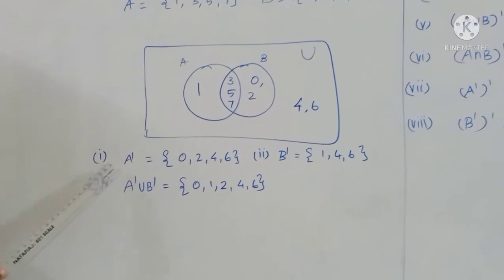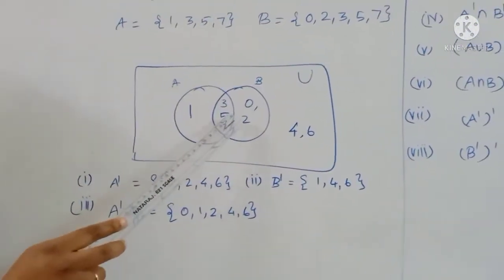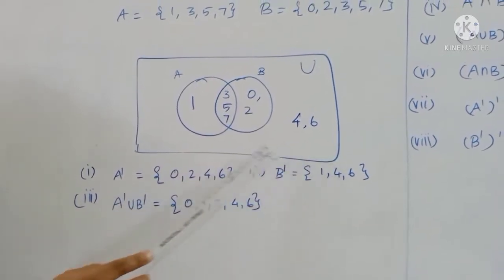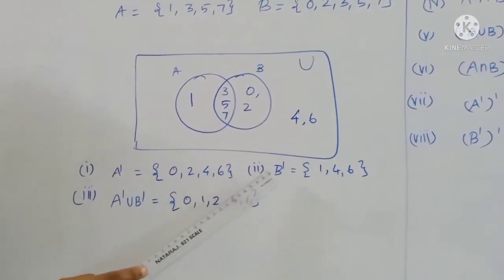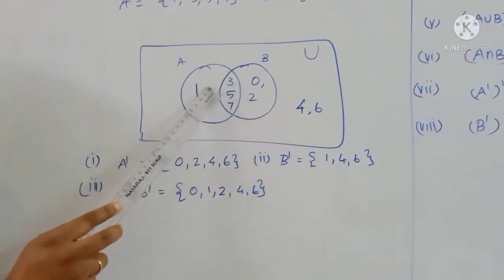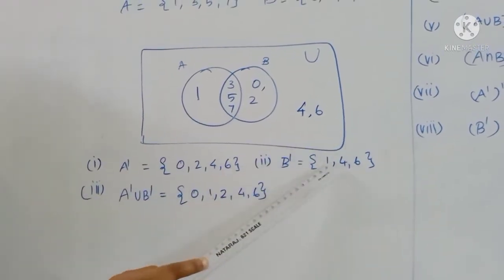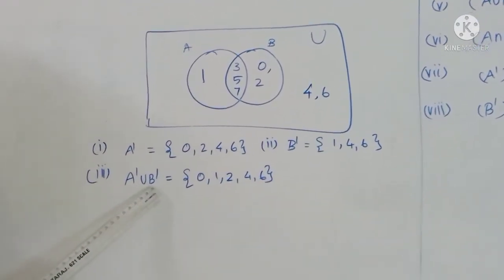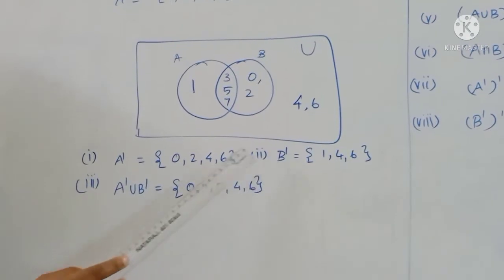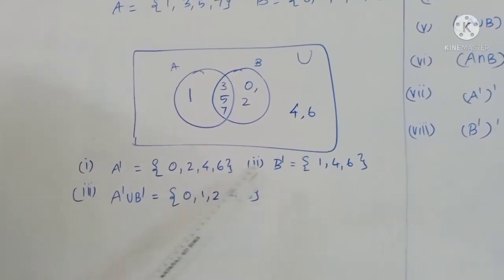A' (A complement) has the value {0, 2, 4, 6}. B' (B complement) has the value {1, 4, 6}. A' union B' gives: {0, 1, 2, 4, 6}.